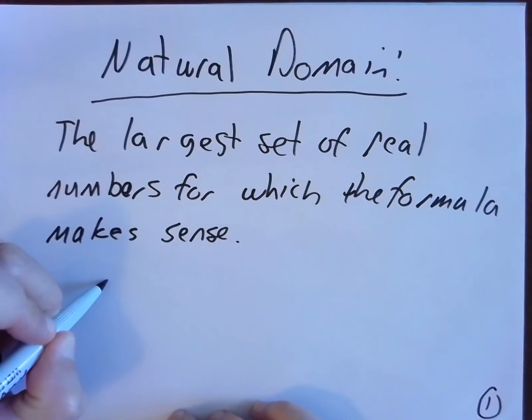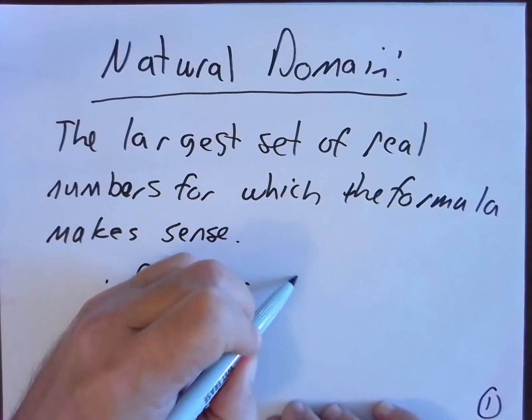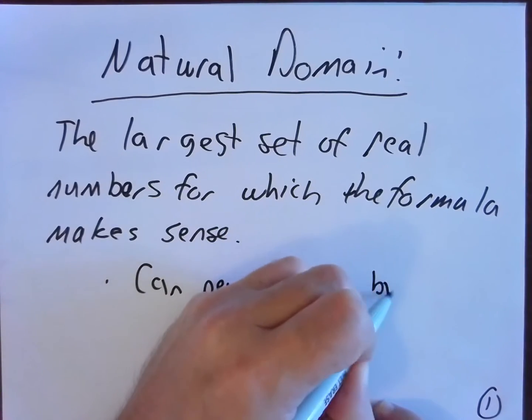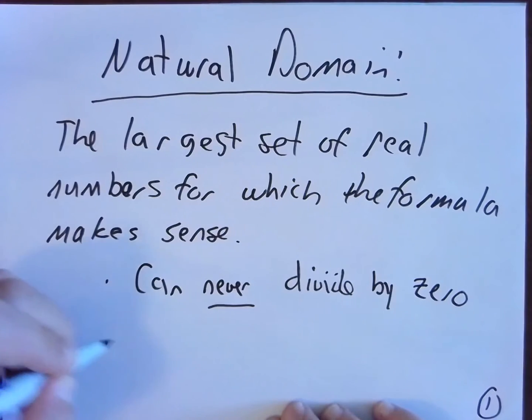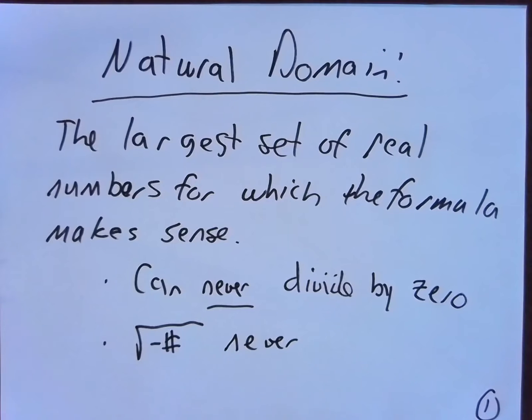And by breaking rules, we mean you can never divide by zero. And you can't take a square root of a negative number. Now, there are other issues we could run into later as you get further in math. You see that you can't take tangent of π over two. You can't take logs of zero or negatives. More advanced functions have more complicated natural domains. But when you're starting out, the two things you need to worry about are dividing by zero and taking square roots or really any even root of a negative number.